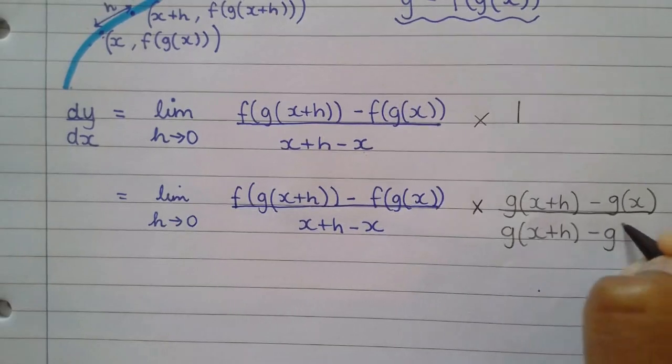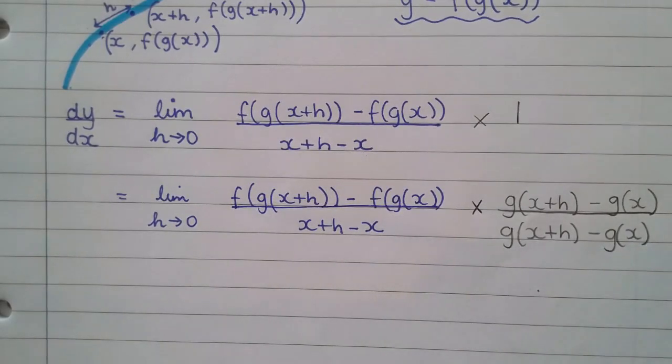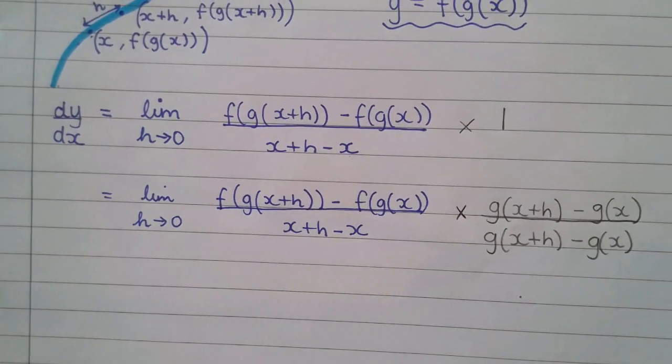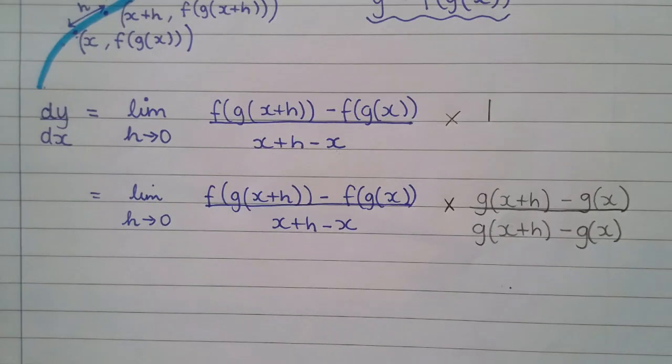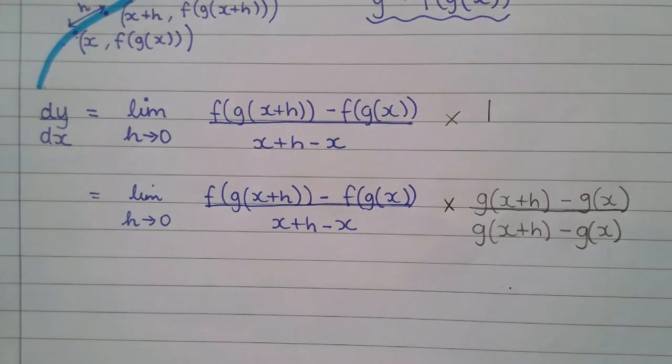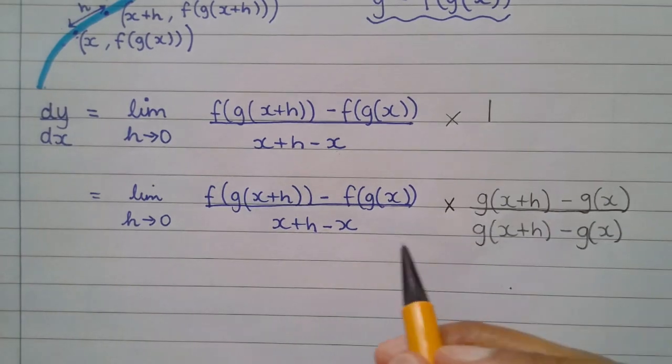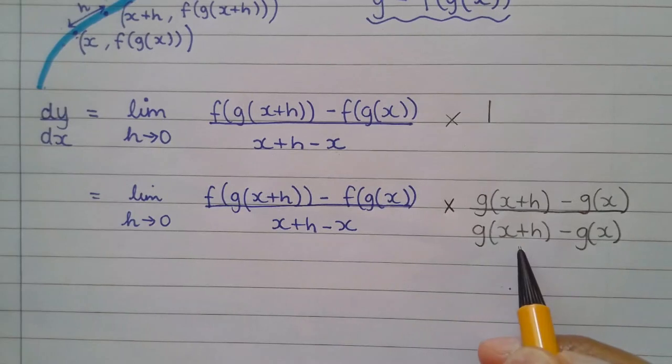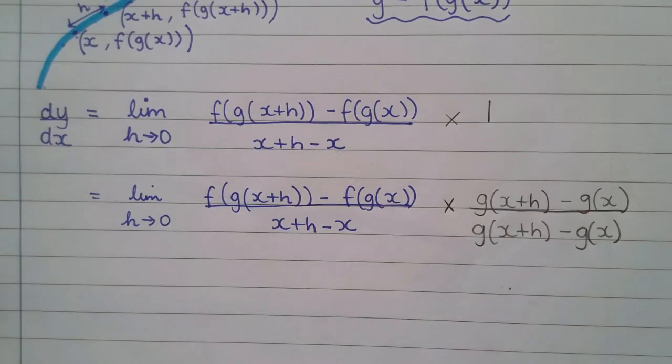Now, this helps us. What we're going to do next is we're going to swap the denominators around. When you are multiplying fractions, that doesn't make any difference again. So mathematically, it's an acceptable thing to do.